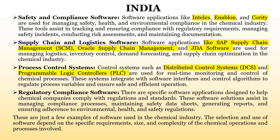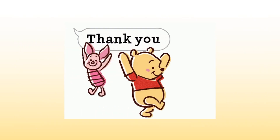The eighth one is regulatory compliance software, which helps maintain safety data sheets, generate reports, and ensure adherence to environmental health and safety regulations. These are all the major sectors being used for the improvement of chemical industries. Hopefully viewers watching this video can understand what kinds of software are implemented in chemical industries and what steps can be taken to improve operations. Thank you, bye bye.